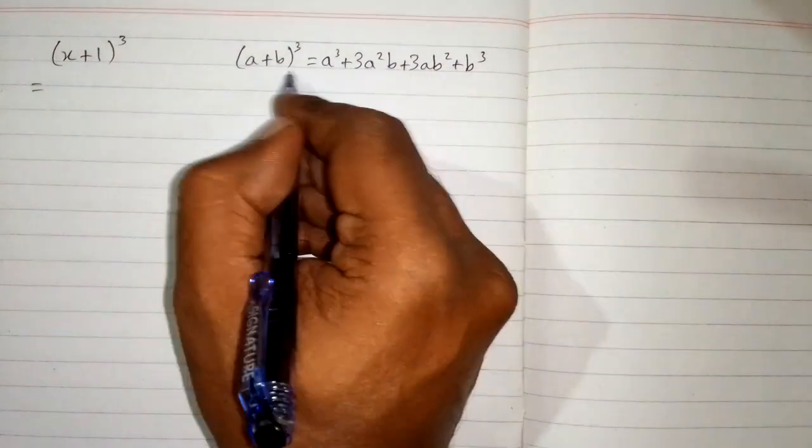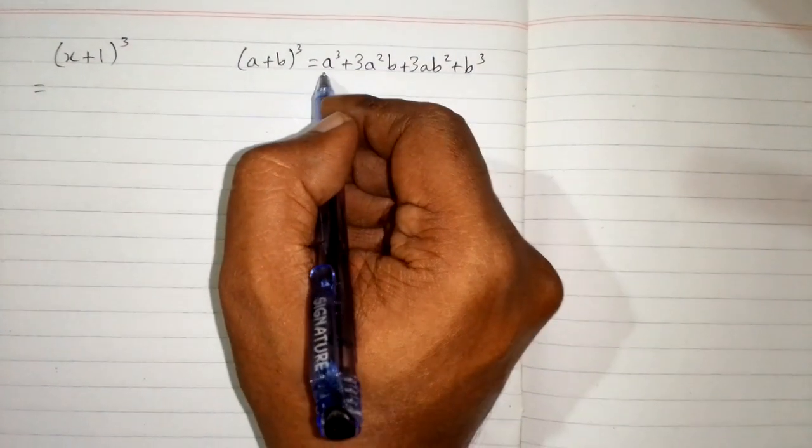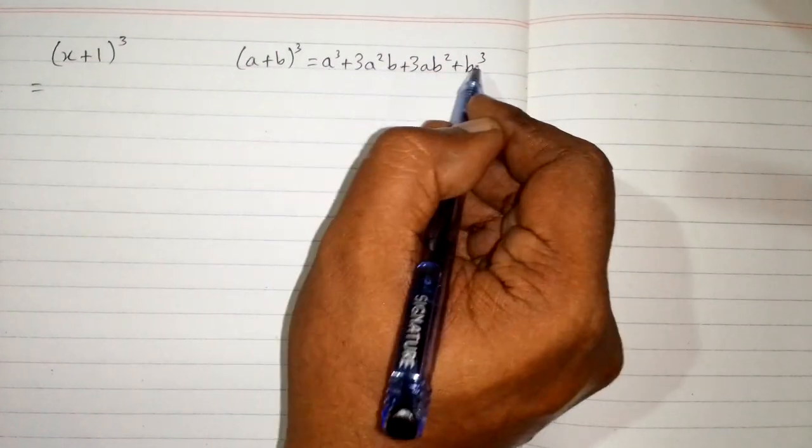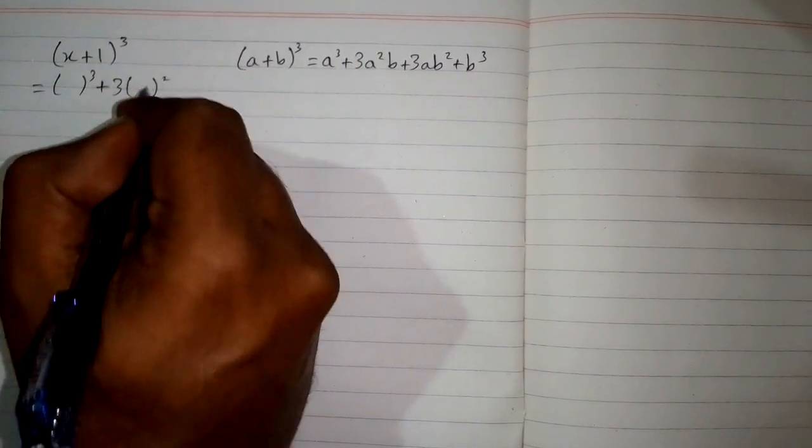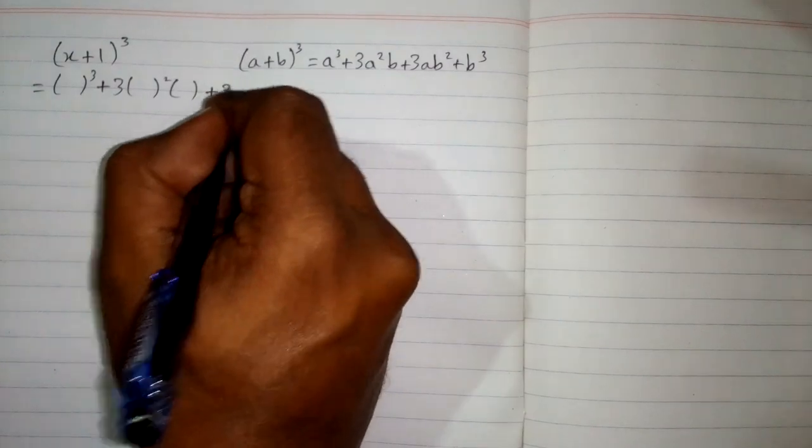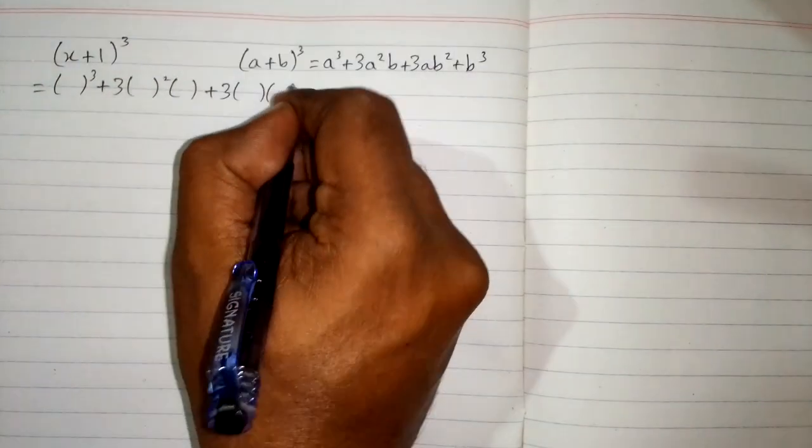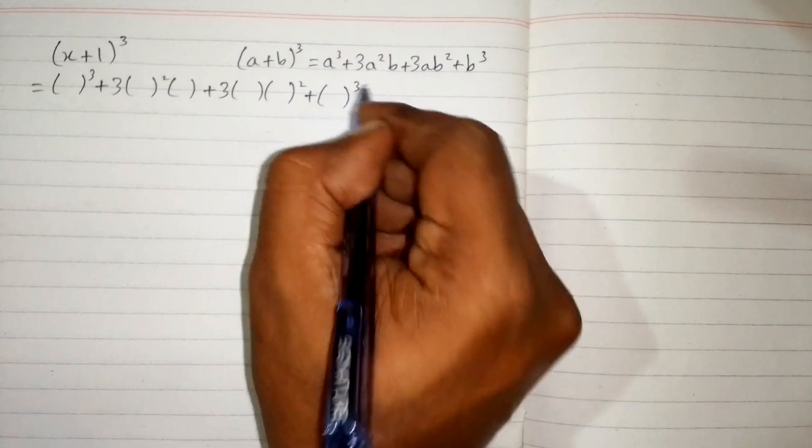First we will write the structure of this formula and put brackets in place of a and b. So this is a³ + 3a²b + 3ab² + b³.